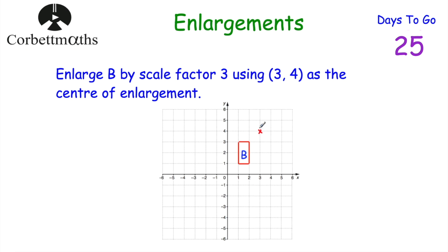Starting with the first point: to get from the centre of enlargement to this point, we go one square left and one square down. Because we're using scale factor 3, we multiply by three — so instead of one left and one down, we go three left and three down. That gives us the new position for this first point.